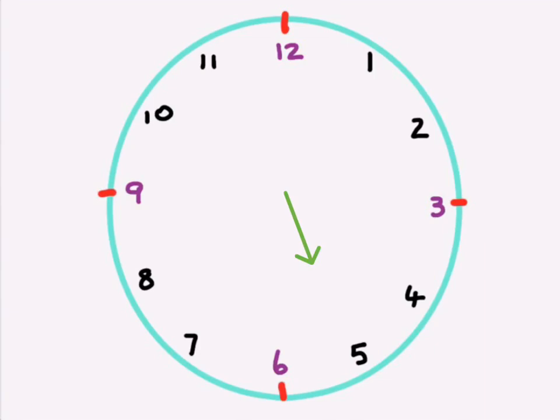Right, so this clock is divided up. You can see from 12 and all the numbers go all the way around, starting from 1 back to 11 and then 12 again. And we're going to have to count in fives to see where our minute hand is and how we're going to get there to tell the time.